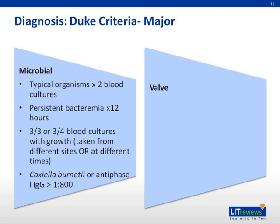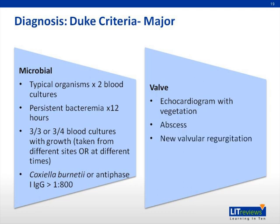The valvular or endocardial criteria include: 1) Positive echocardiogram for infective endocarditis with an oscillating mass. 2) Abscess. 3) New partial dehiscence of prosthetic valve or new valvular regurgitation.